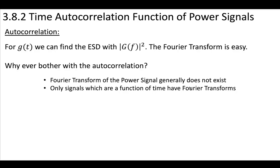The Fourier transform of a power signal generally will not exist. Only signals which are a function of time are going to have these Fourier transforms, and so these power signals are not always going to have a Fourier transform.